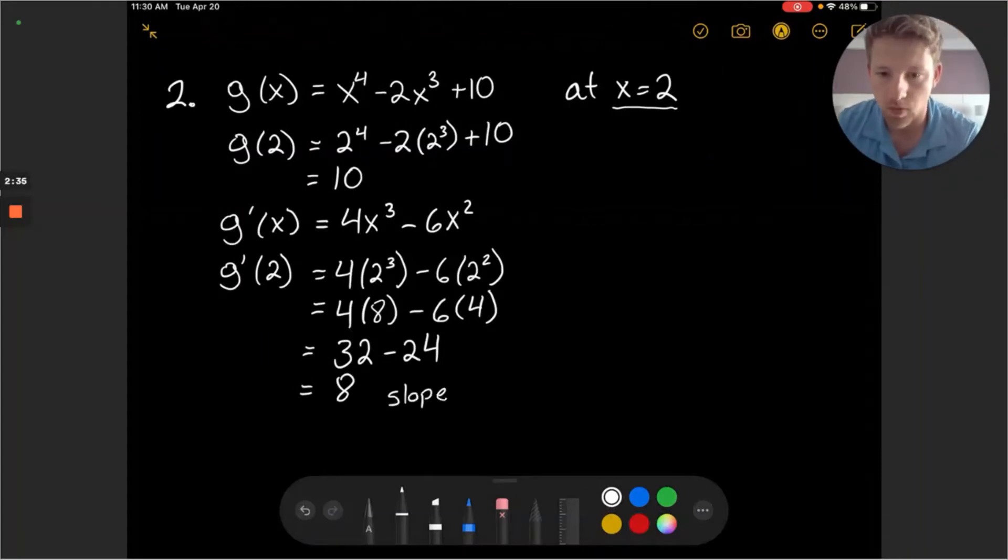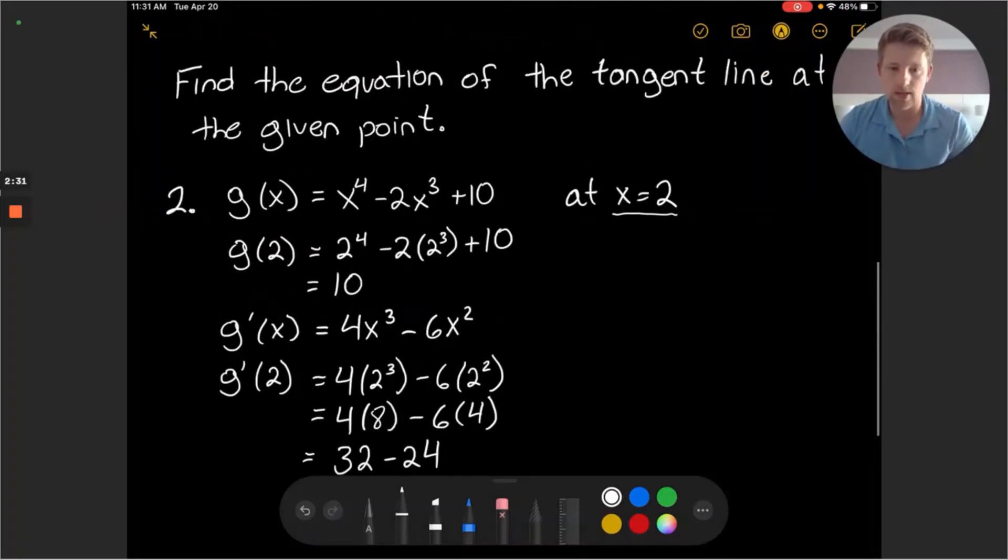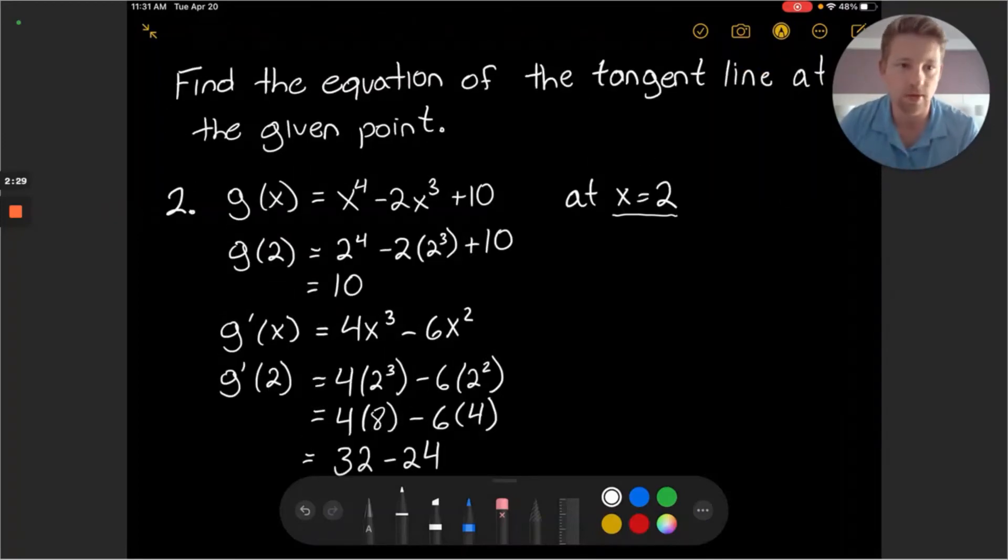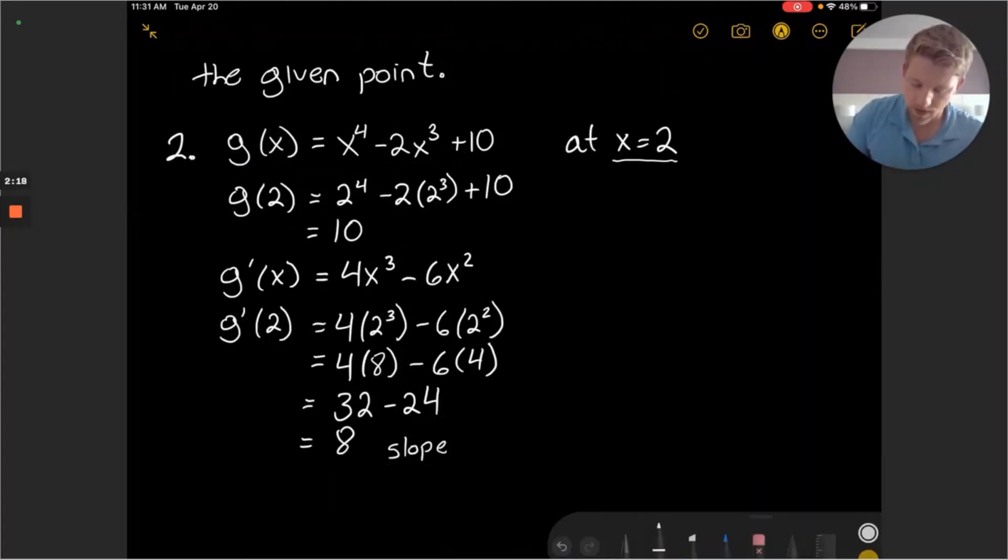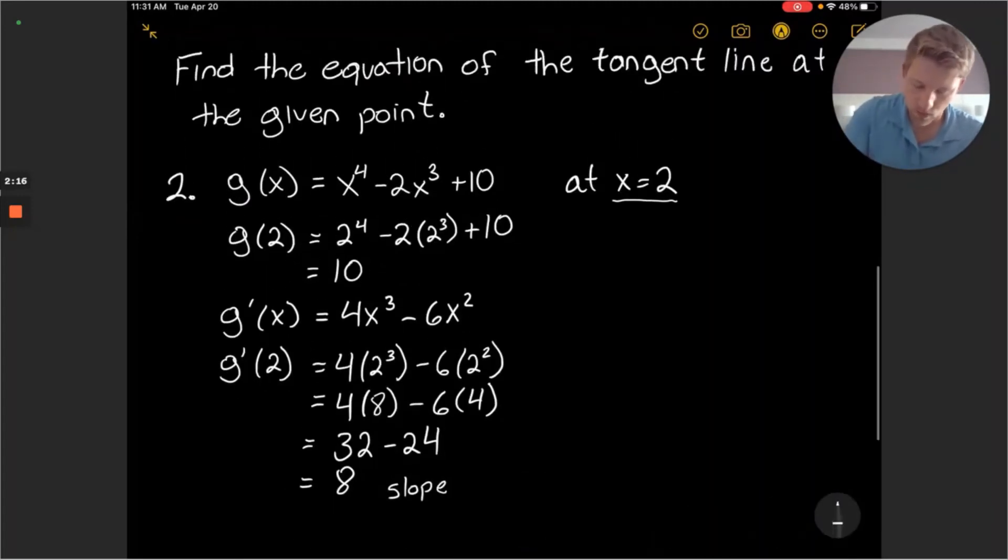So that's going to be the slope of our line. So let's put it together here. We'll start with maybe a point slope form and then we can take it to the y equals mx plus b or slope intercept form. So notice that we have a slope of 8 and our point was 2 comma 10.